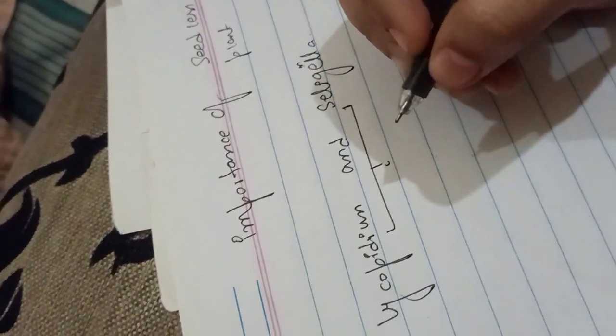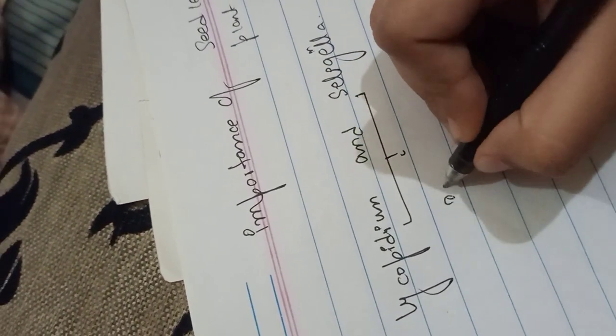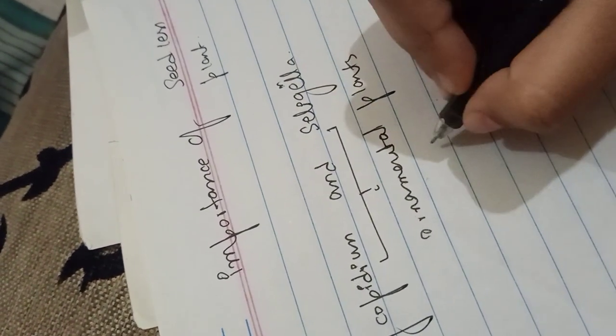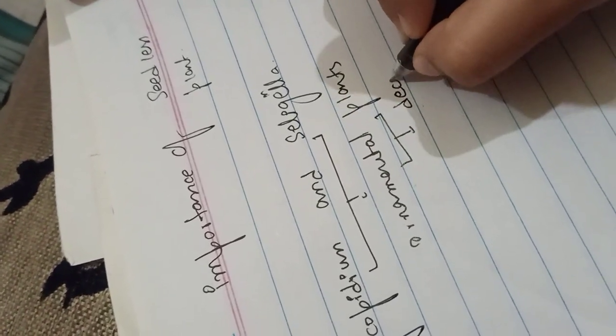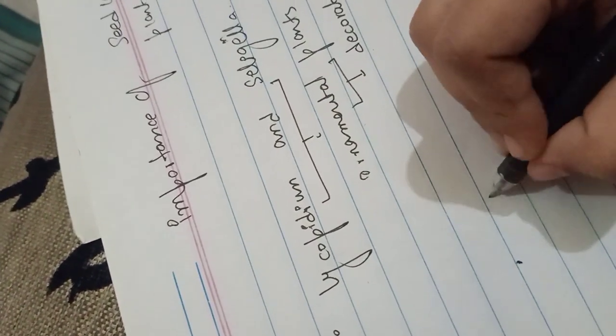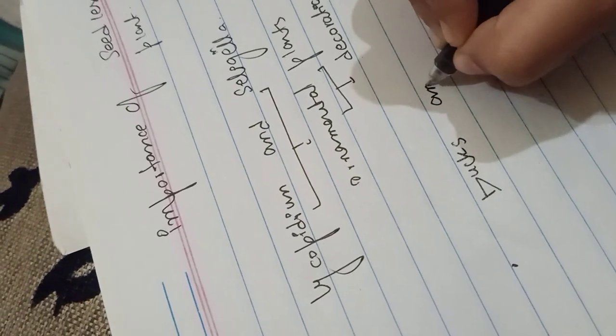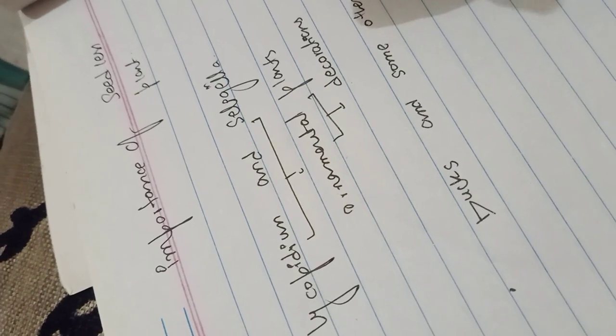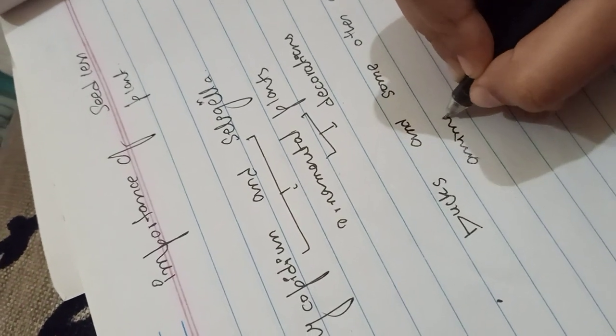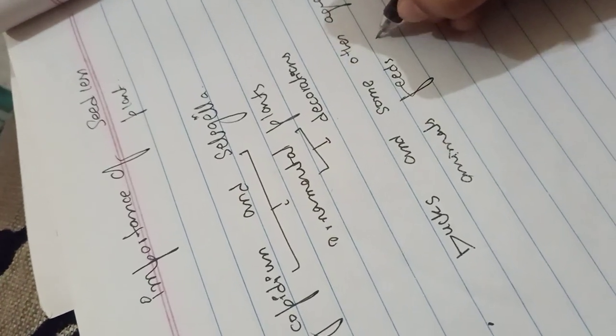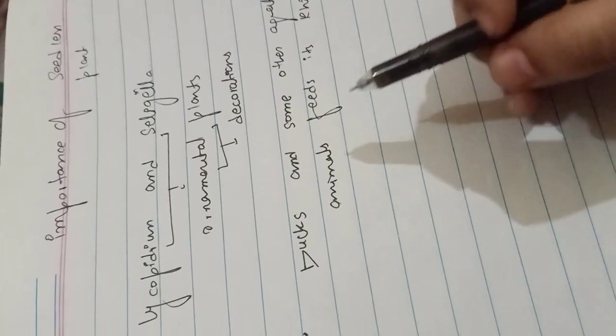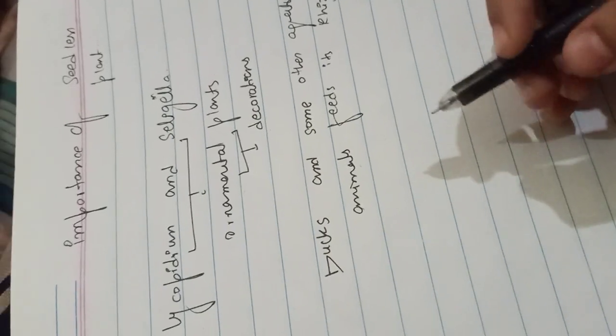These are ornamental plants, which means they are used for decoration. Additionally, ducks and some other aquatic animals feed on the rhizome of these plants, which is a stem.